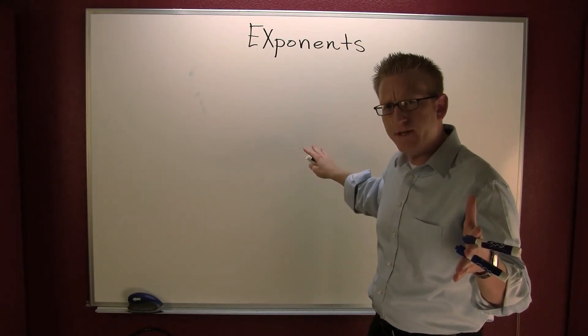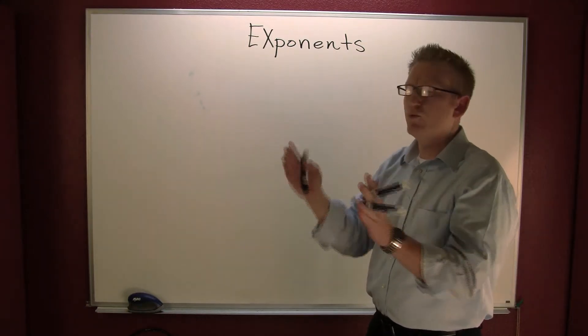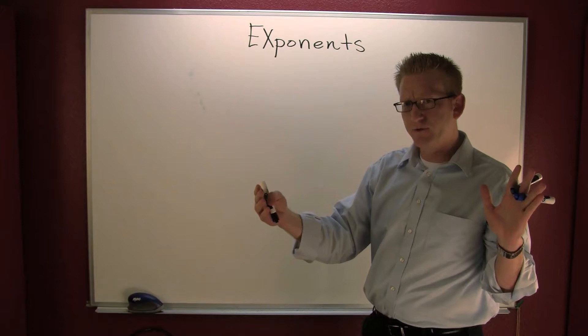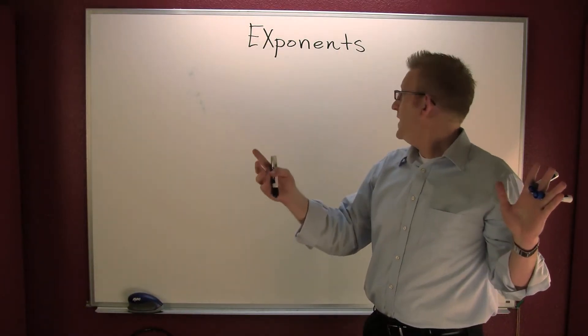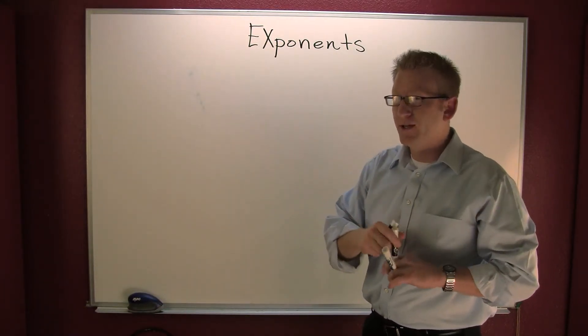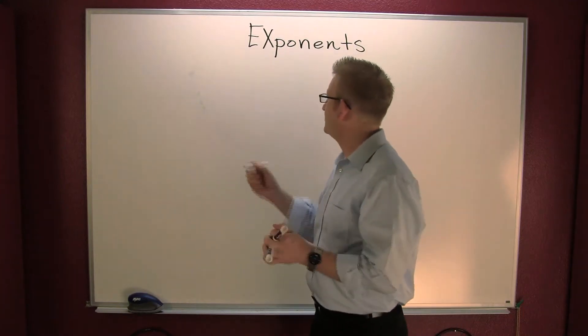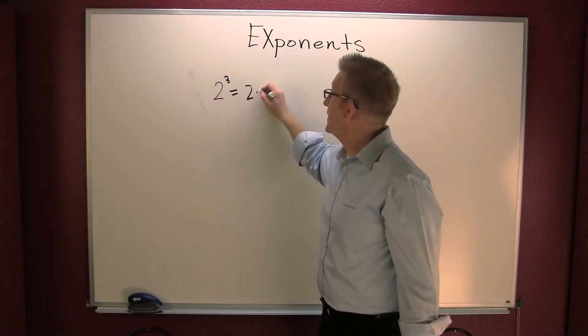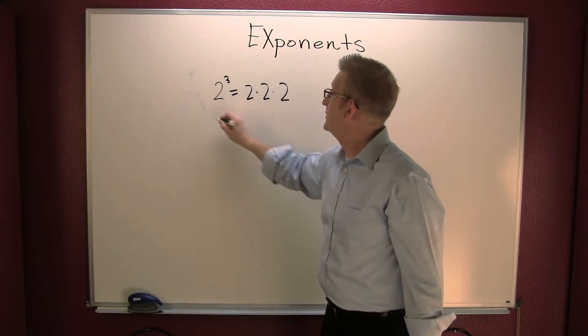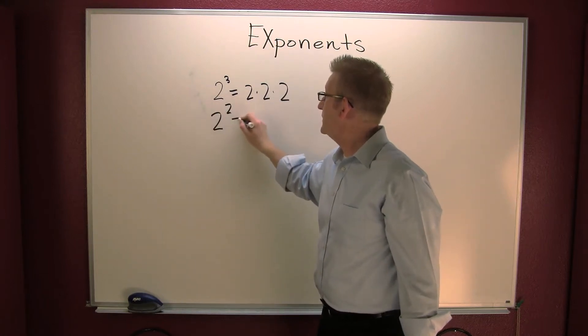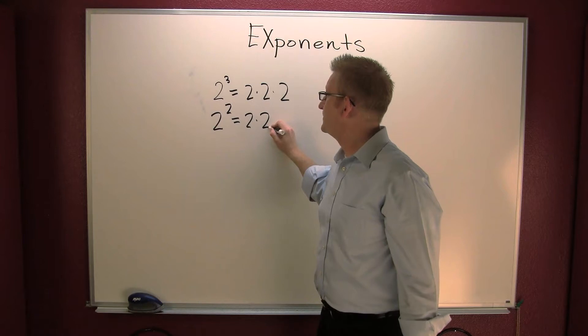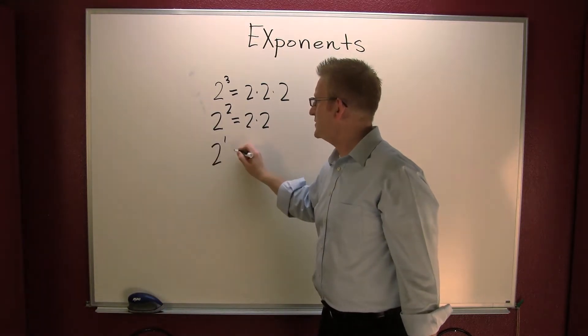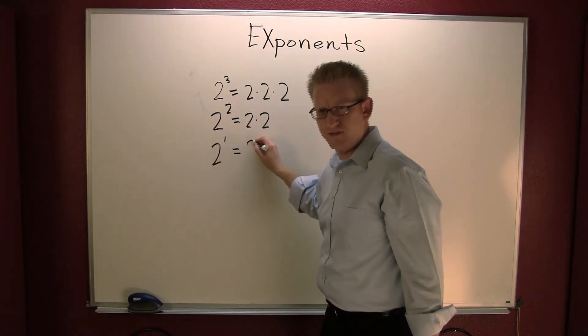So we're getting into this a little bit. What I want to do is I want to write my exponent in expanded form. And this time I don't want to evaluate, because I want to get into something. Two to the third power is two times two times two. Two to the second power is two times two. Two to the first power, that's two.